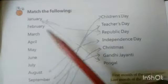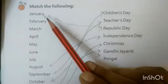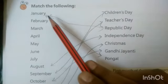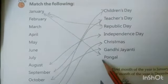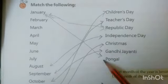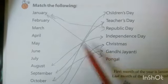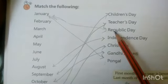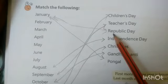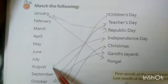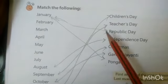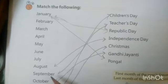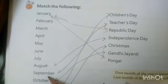Now, match the following festivals to their months. In January, which festivals are celebrated? Pongal and Republic Day — Pongal is a religious festival and Republic Day is a national festival. In August, Independence Day is celebrated on 15th August.